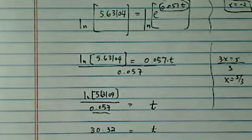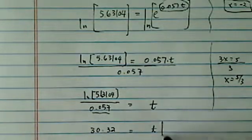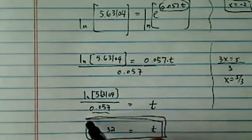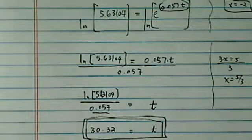And depending on what the original equation comes from, it could have been seconds, it could have been t days. But nonetheless, for our particular purpose of solving this exponential equation, the answer is t equal to 30.32.